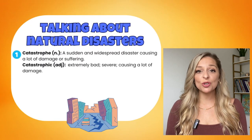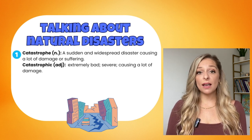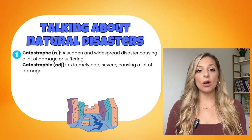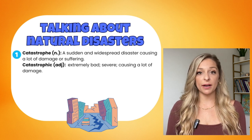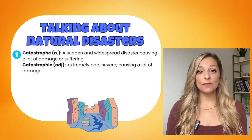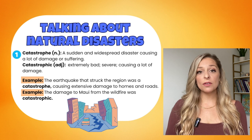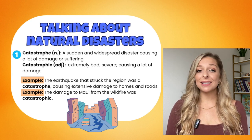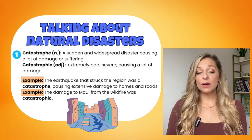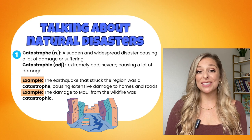What I prefer to focus on is how to talk about these natural disasters. Word number one is catastrophe, and the adjective form catastrophic. A catastrophe is a sudden and widespread disaster causing a lot of damage and suffering. Catastrophic means extremely bad, severe, and causing a lot of damage. For example: the earthquake that struck the region was a catastrophe, causing extensive damage to homes and roads. Or: the damage to Maui from the wildfire was catastrophic — it was extremely bad.